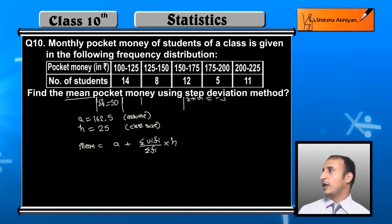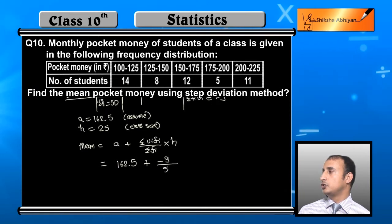The value of a here is 162.5 plus sigma ui fi value is minus 9 upon sigma fi value 50 into 25.